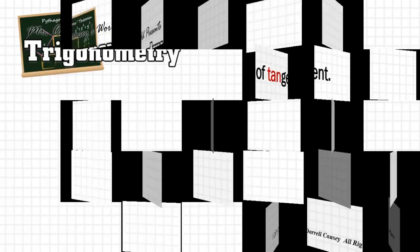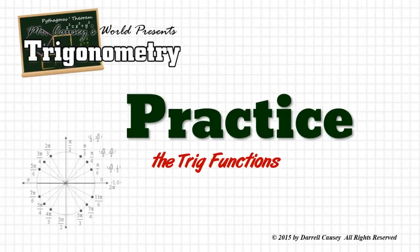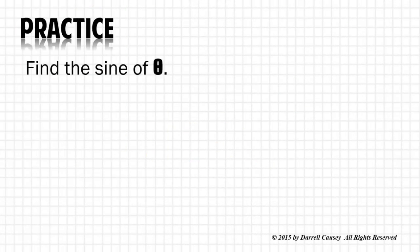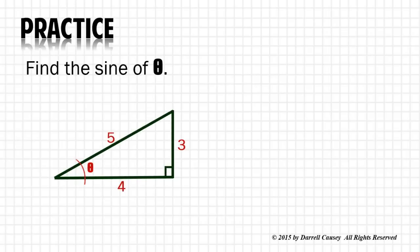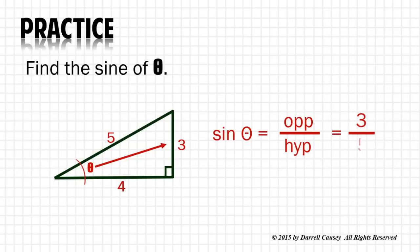Now you need to know these functions so we can do a little practice. Find the sine of θ. Sine of θ is opposite over hypotenuse. There's the opposite side, so it's 3 over 5.